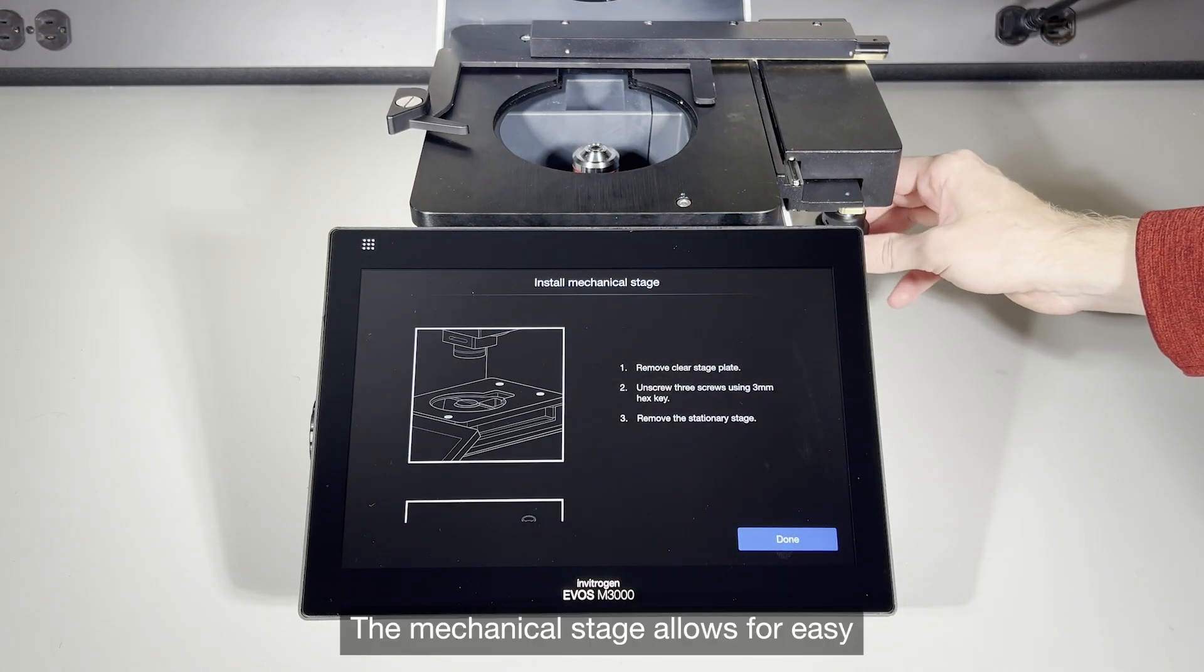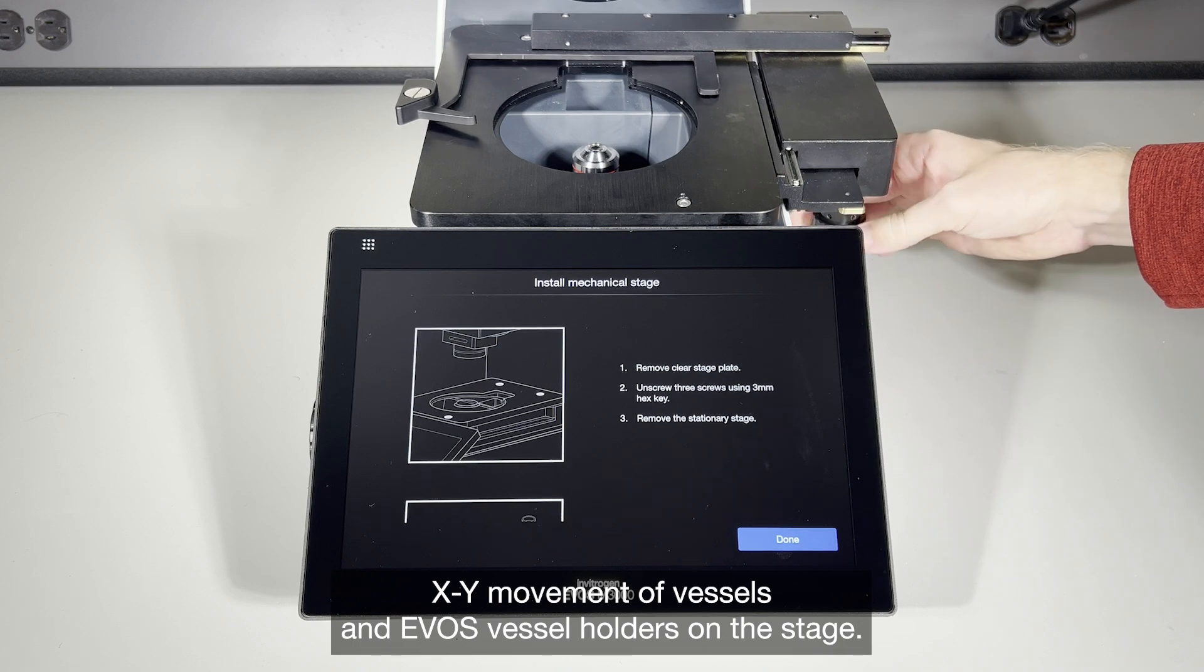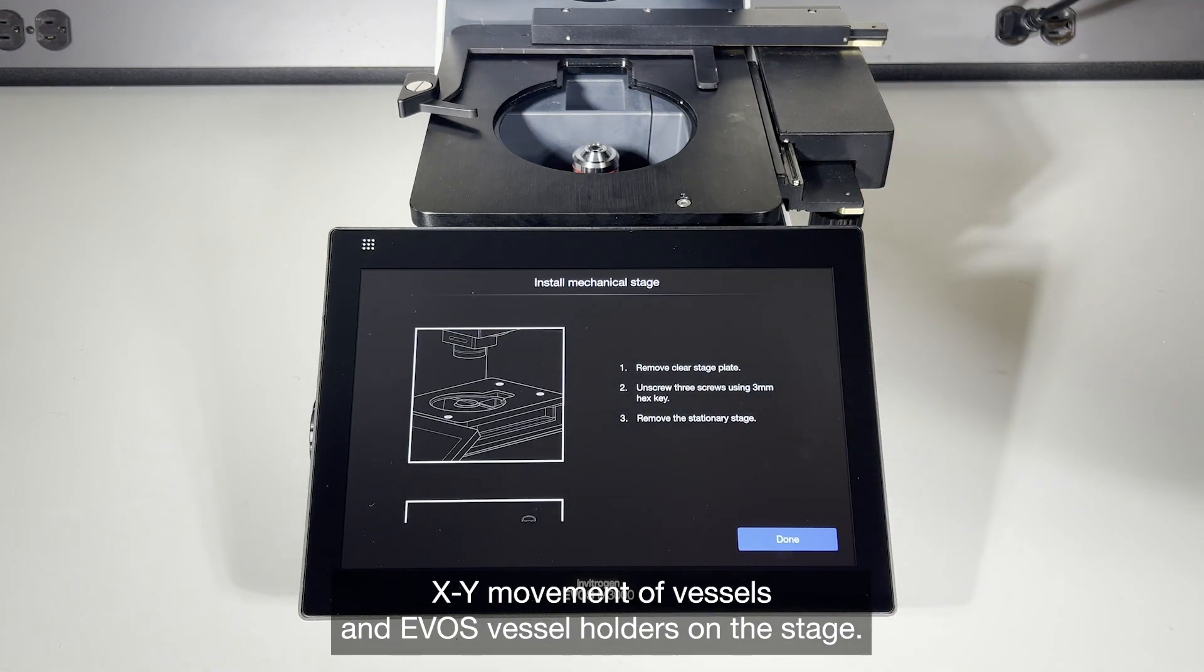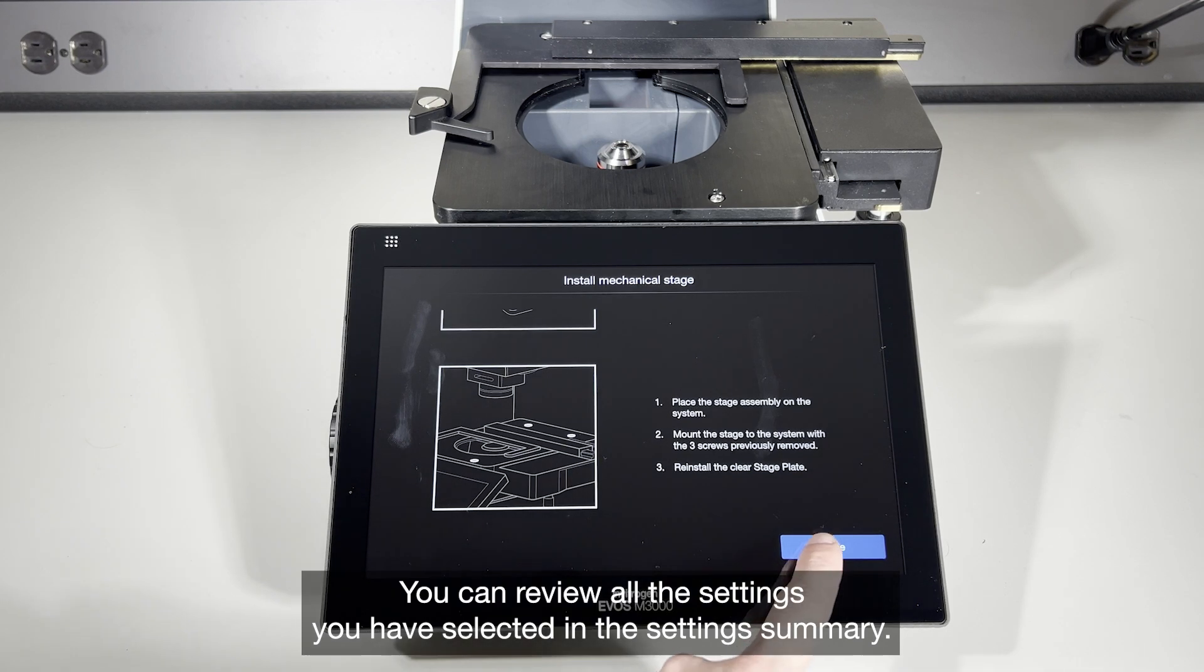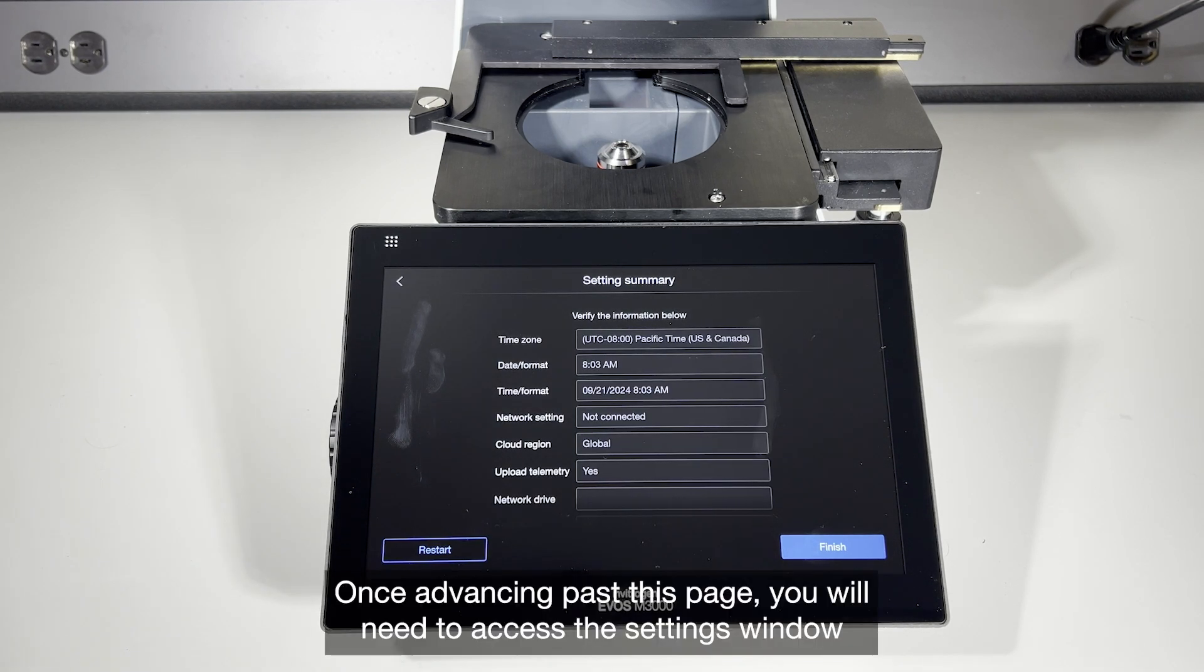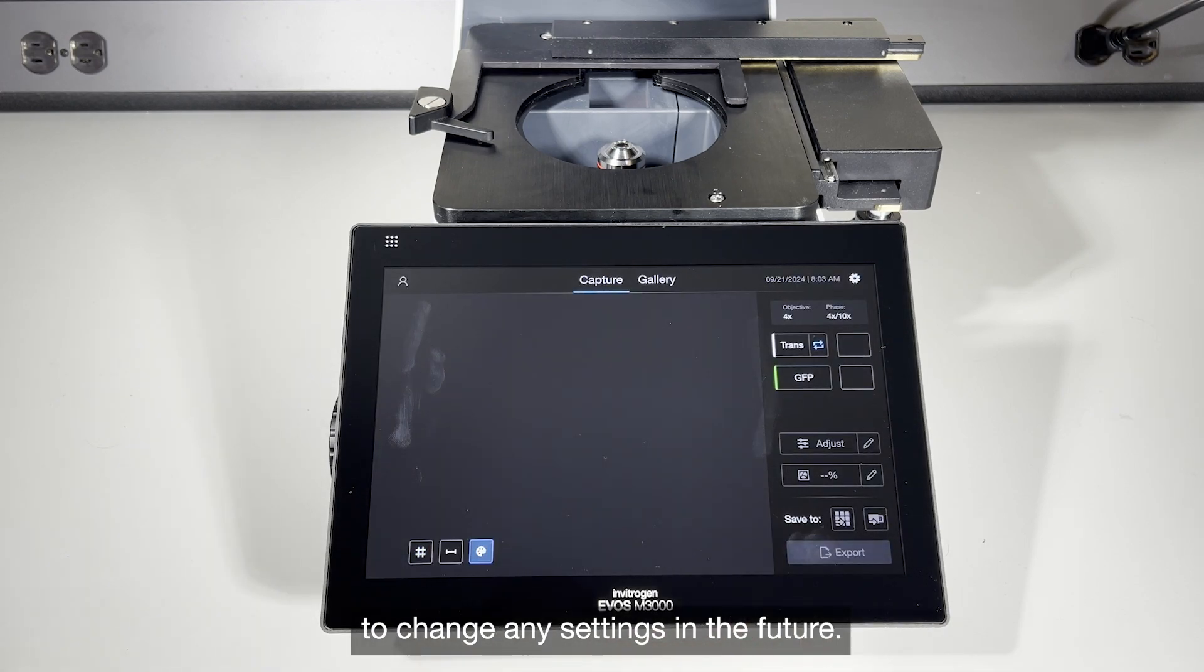The mechanical stage allows for easy XY movement of vessels and EVOS vessel holders on the stage. You can review all the settings you have selected in the settings summary. Once advancing past this page, you will need to access the settings window to change any settings in the future.